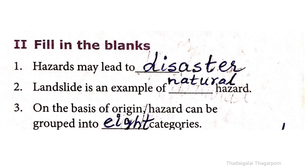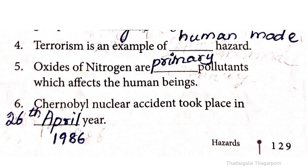Third question: On the basis of origin, hazards can be grouped into dash categories. Fourth question: Terrorism is an example of dash hazard. The answer is human-made hazard.